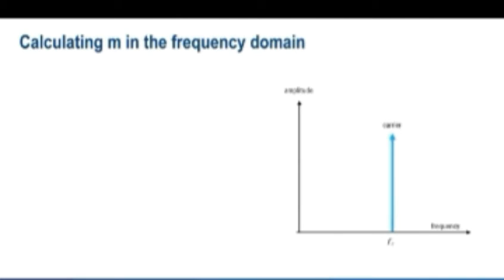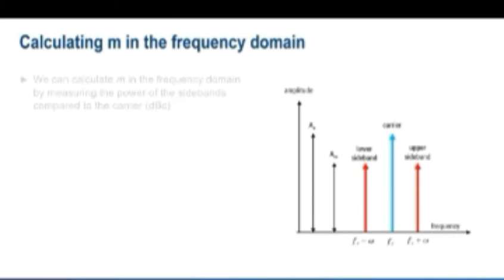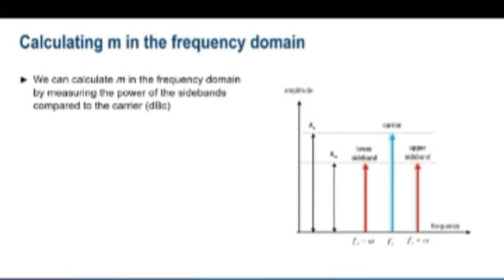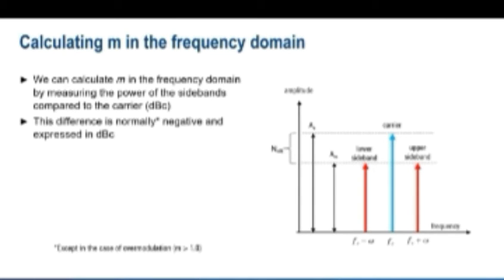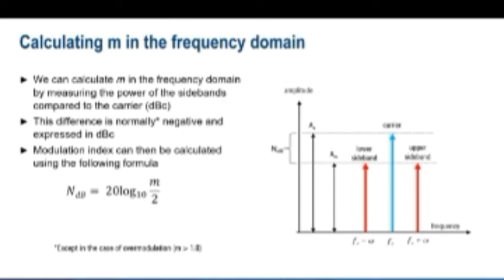In the frequency domain, an AM signal consists of an unmodulated carrier and two modulated sidebands: one upper sideband and one lower sideband. The values of Ac and Am from our time domain discussion are also shown here. Modulation depth m can be calculated in the frequency domain by measuring the difference in amplitude between the carrier and sidebands. This difference n is normally negative and expressed in dBc. We can then calculate the modulation index using a simple formula.